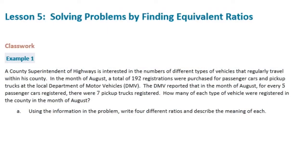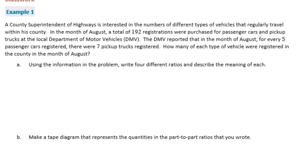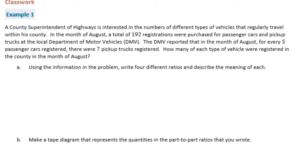6th grade module 1 lesson 5 classwork example 1. A county superintendent of highways is interested in the numbers of different types of vehicles that regularly travel within his county. In the month of August, a total of 192 registrations were purchased for passenger cars and pickup trucks at the local Department of Motor Vehicles. The DMV reported that for every five passenger cars registered, there were seven pickup trucks registered. How many of each type of vehicle were registered in the county in the month of August?